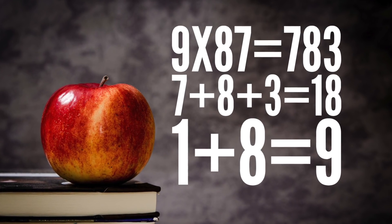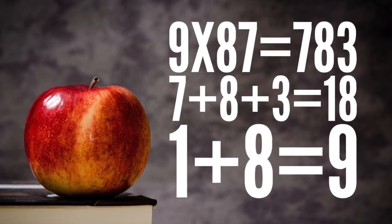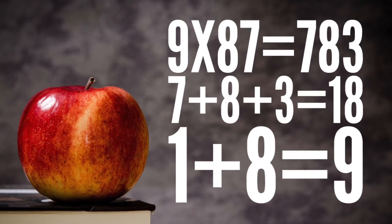Okay, let's put this thing to the test. 9 times 87 is 783. 7, 8, and 3 add up to 18, and 1 and 8 equals 9.